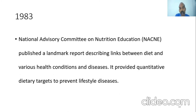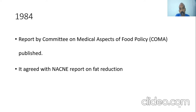Between 1954 and the early 1980s, there were many discussions on nutrition but people were unable to agree on even basic matters. Finally, in 1983, the National Advisory Committee on Nutritional Education, or NACNE, published a landmark report describing links between diet and various health conditions. It was the first to provide quantitative dietary targets to prevent lifestyle diseases, taken forward in 1984 by the Committee on Medical Aspects of Food Policy, or COMA.